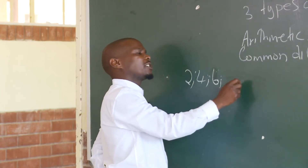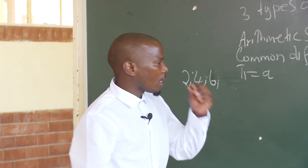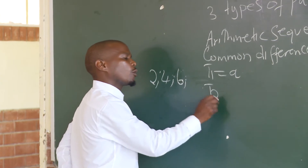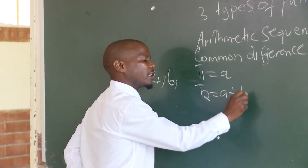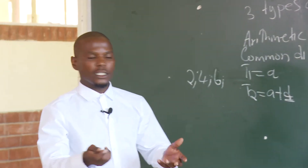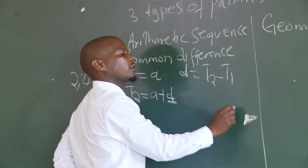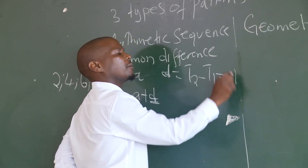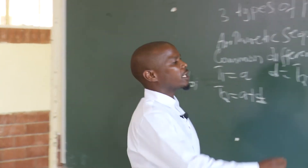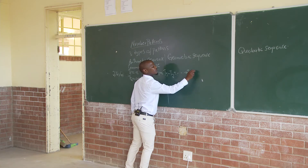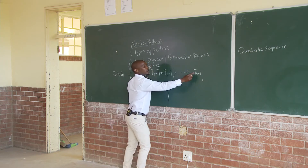The pattern requires at least three terms. The common difference is: term number 2 minus term number 1, term number 3 minus term number 2, and so on, up until term number n minus term number n minus 1. So d is equal to Tn minus T(n-1).